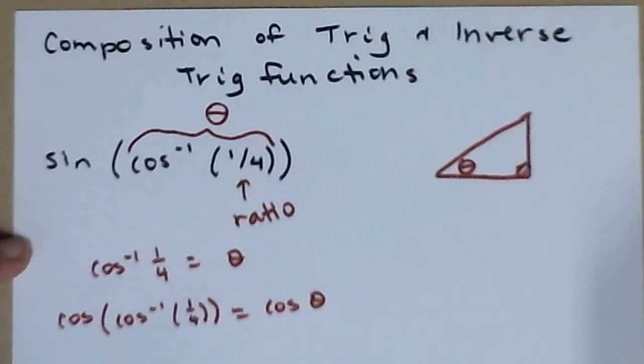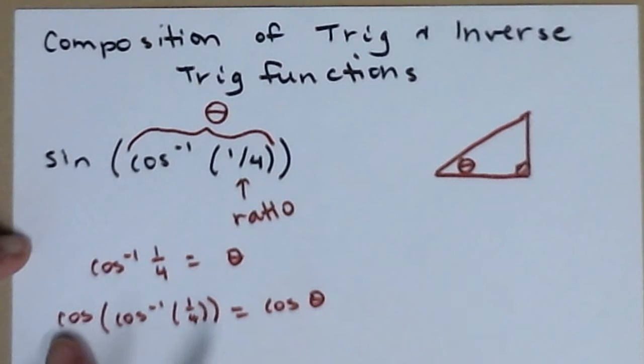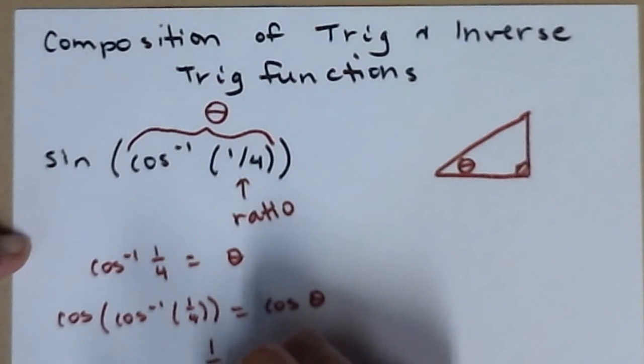What happens if we do a composition of a function and its inverse? Well, as long as your domain restrictions are met, these two are matter and antimatter. They annihilate, and all you get out is the argument.